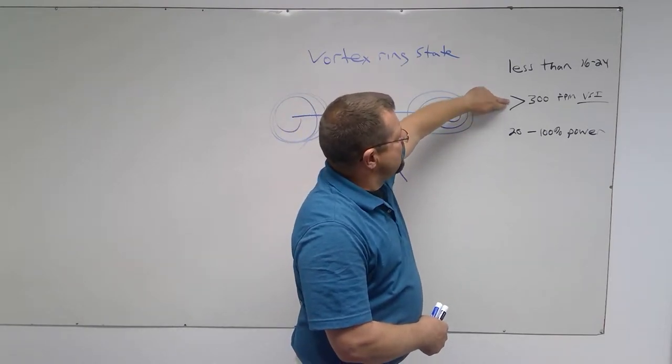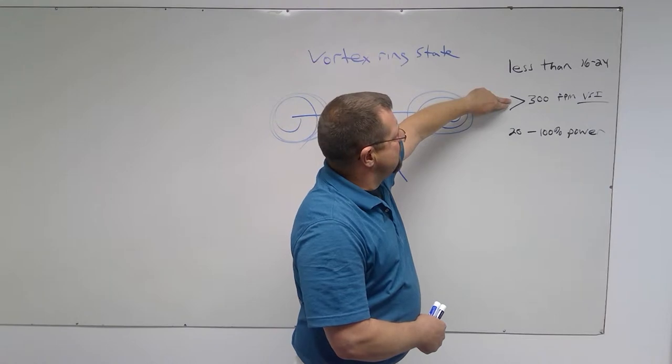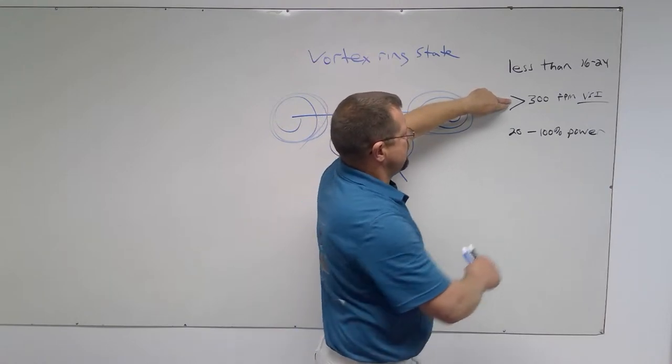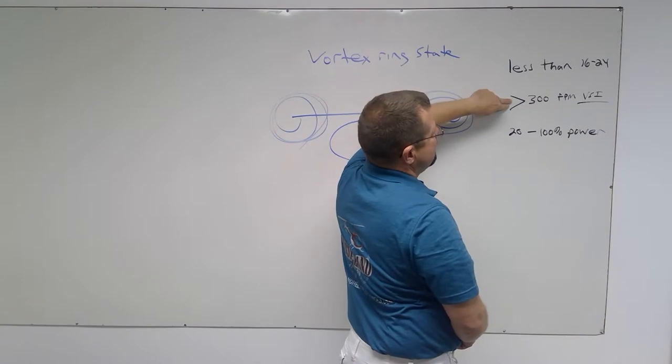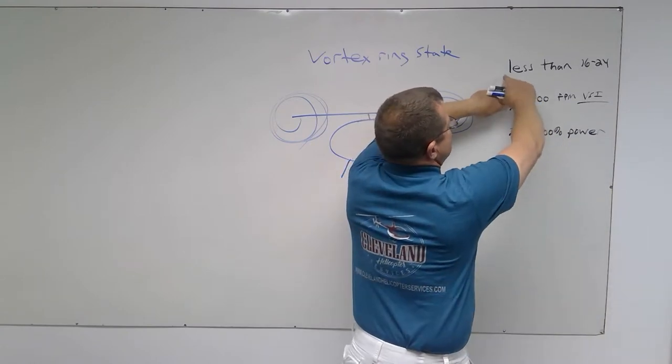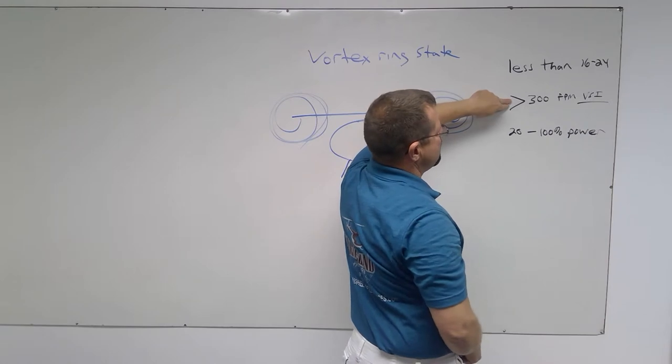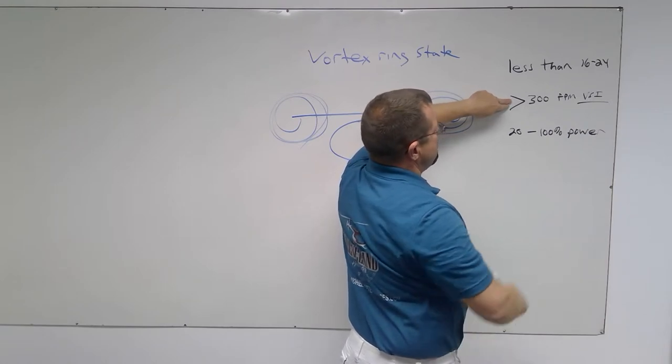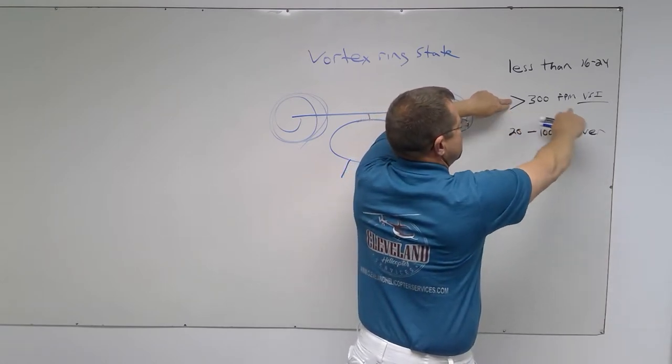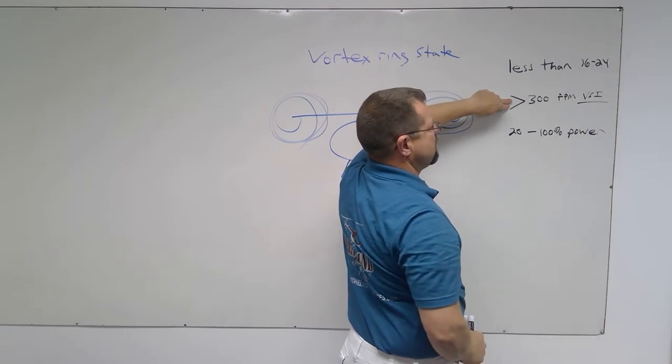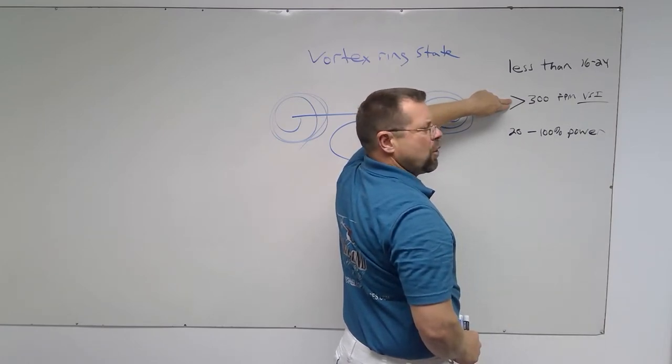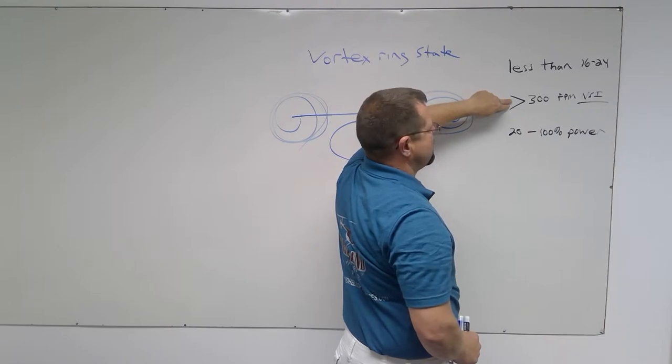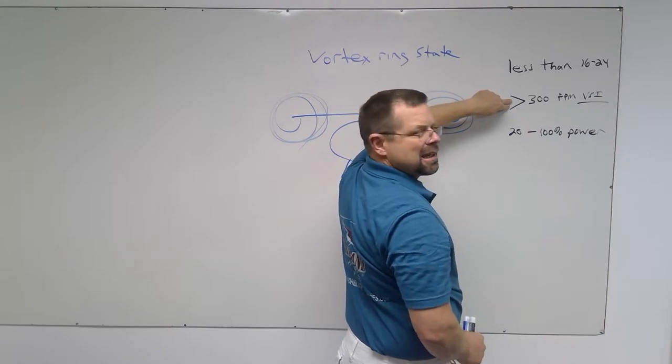Let's talk about taking this one away. Can I get into settling with power? I'm using 20 to 100 percent of the power. I'm traveling less than 16 to 24, but I don't have a descent rate greater than 300. In other words, I either have no descent rate or I have a descent rate less than 300. So I cannot get into settling with power.